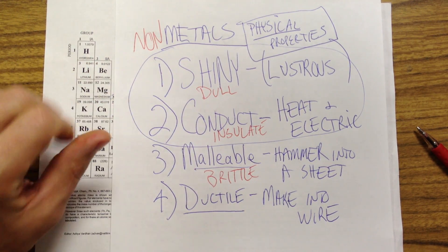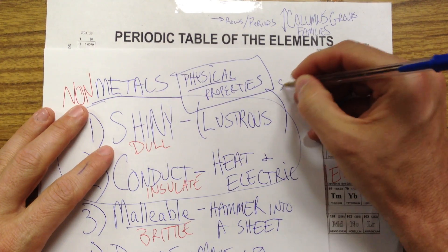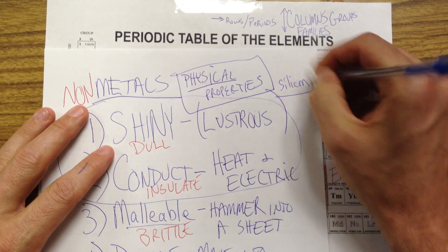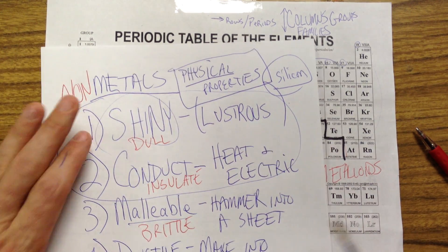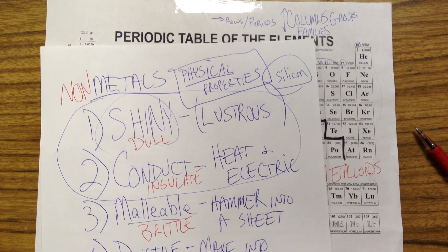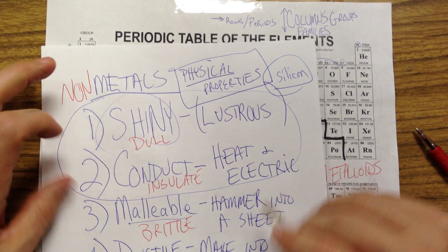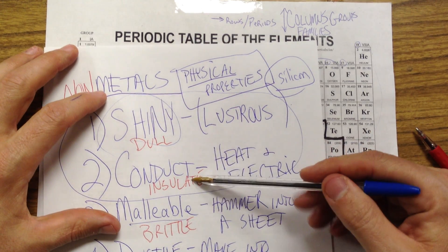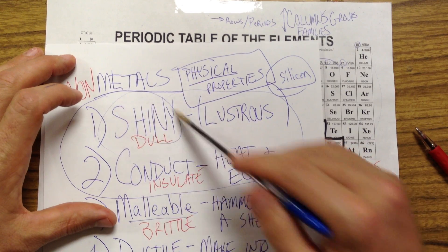But sometimes, as in the case of silicon, silicon is kind of interesting because silicon is shiny. It conducts sometimes, but not always. And so it sort of conducts, sort of insulates, depends.